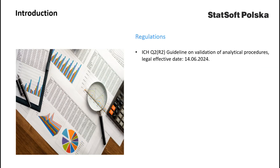In 2023, the ICH guideline on validation of analytical procedures was approved, with a legal effective date scheduled for June 2024. In today's webinar, I will discuss statistical methods that can be used in the evaluation of accuracy and precision, whereas a second webinar scheduled in June will be dedicated to validation of calibration models and lower range limit estimation.